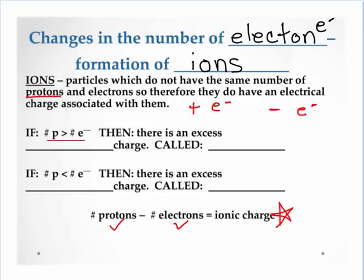So we have two scenarios. If my number of protons is greater than my number of electrons, well, we're not changing my number of protons. So the only way protons could be bigger than electrons is if I lost electrons.